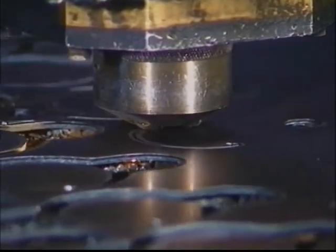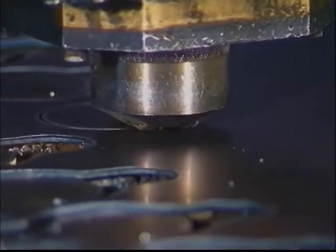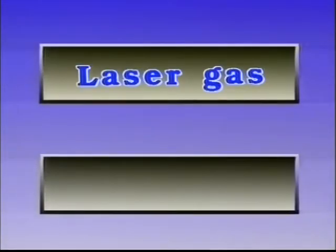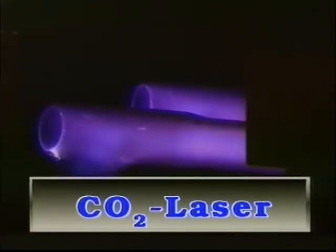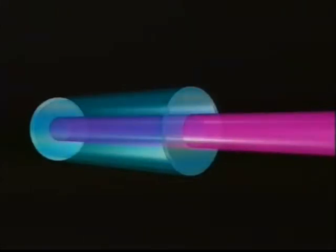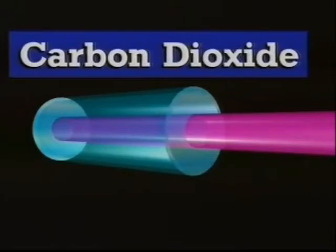Materials processing with a CO2 laser consumes gas. A laser gas is necessary to generate the laser radiation for cutting and welding, and a process or assist gas is also required. The carbon dioxide laser, or CO2 laser, is the laser type most often used for cutting of metals and other materials. The laser light is generated by an electrical discharge in a gas-filled glass tube. Two mirrors, one of which is partially transmitting, make up the ends of the tube.